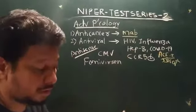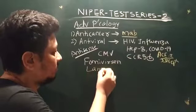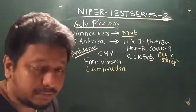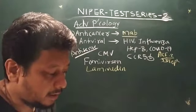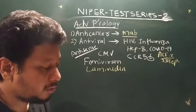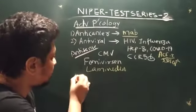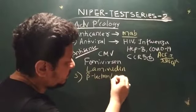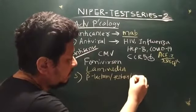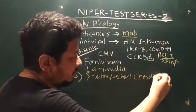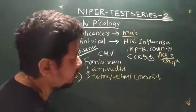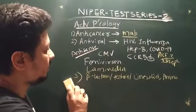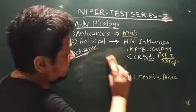For hepatitis B, the key drug is lamivudine. Under antibiotics, the important topics include beta-lactams, tetracyclines, linezolid, and aminoglycosides. These are very important for NIPER and have been covered in the global video classes.